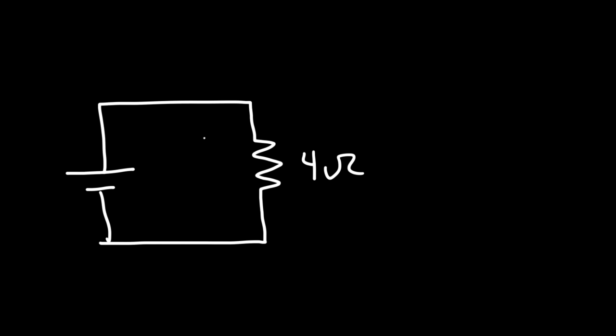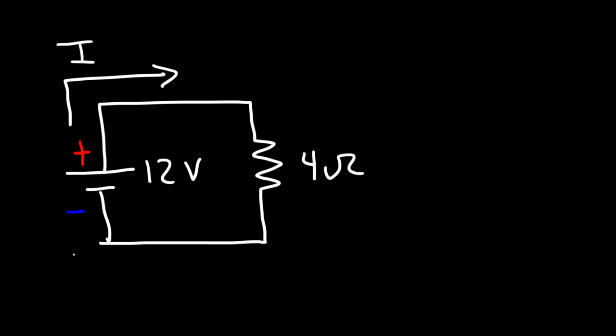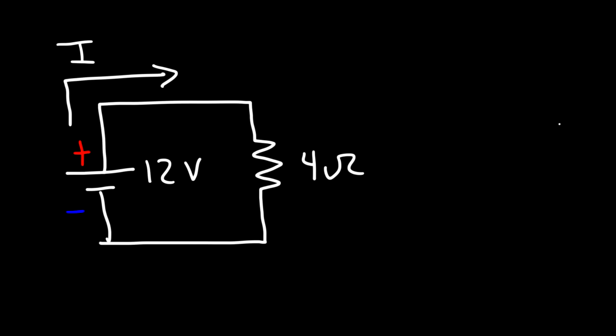Now let's work on a practice problem. Let's say if we have a 12-volt battery connected across a 4-ohm resistor. What is the current flowing in this circuit? Conventional current flows from the positive terminal of the battery to the negative terminal of the battery. This is the opposite direction to electron flow. So to find the current in this circuit, we can use Ohm's law.